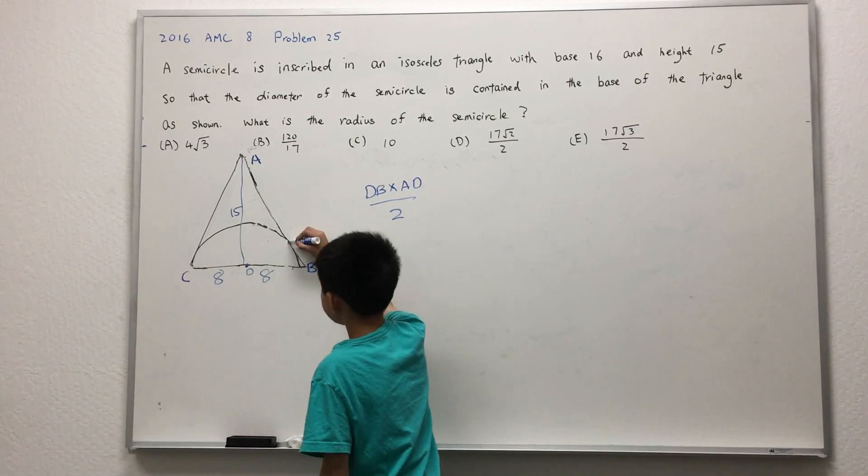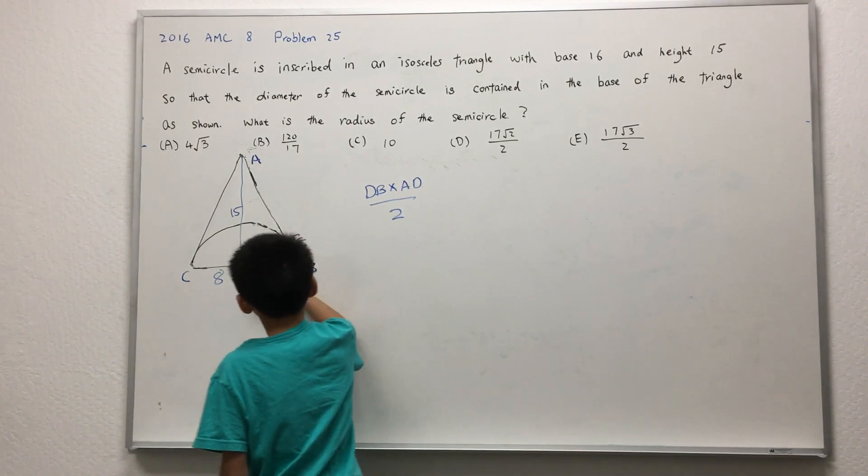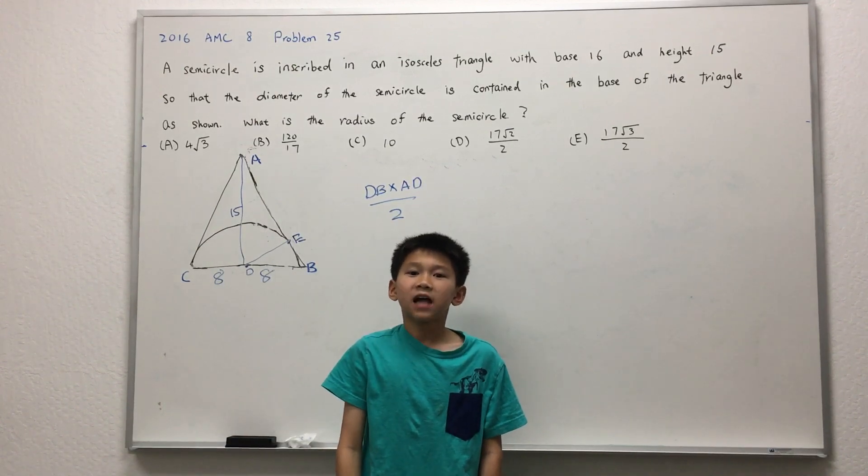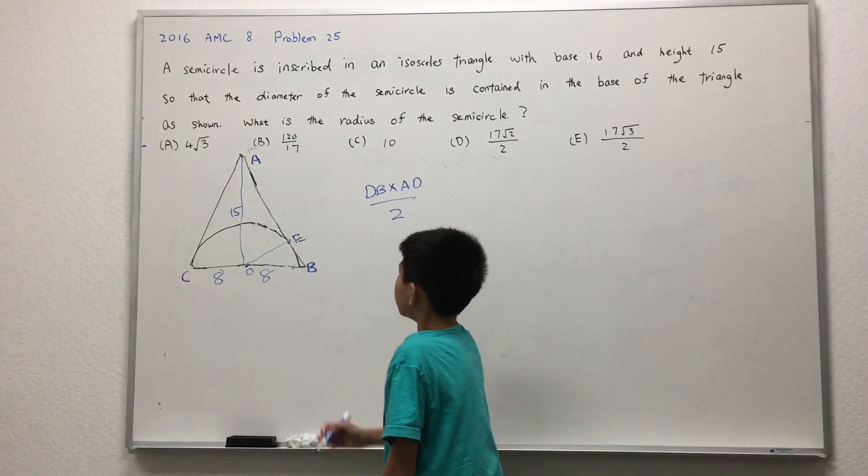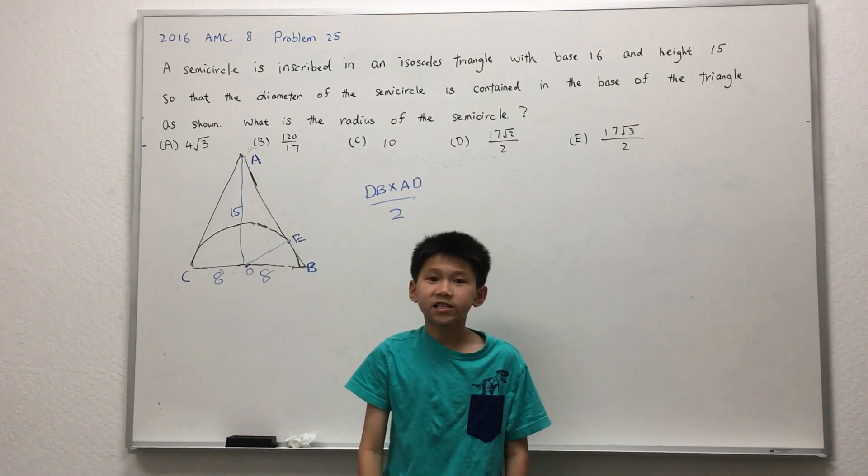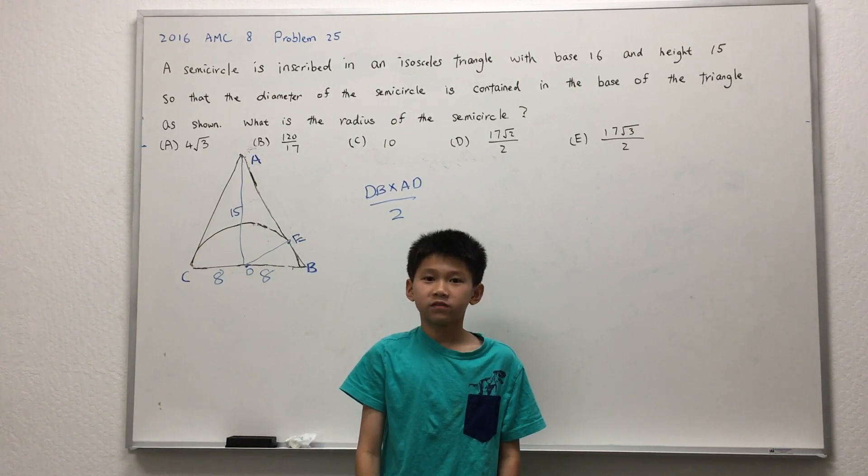Let the tangency point of the semicircle and line AB be point E. This means that line DE is the height of triangle ABD. DE is perpendicular to AB, because any tangent line to a circle is always perpendicular to the radius of the circle.